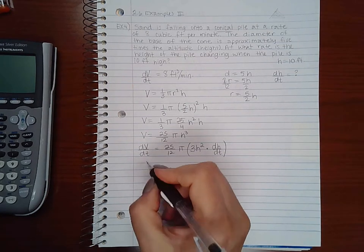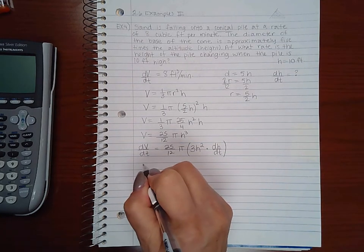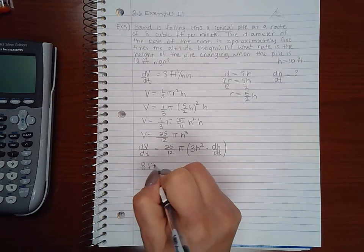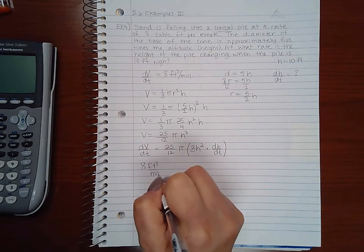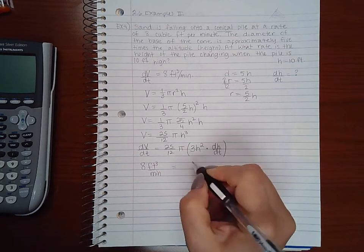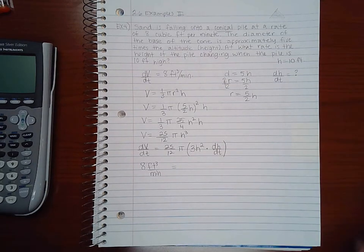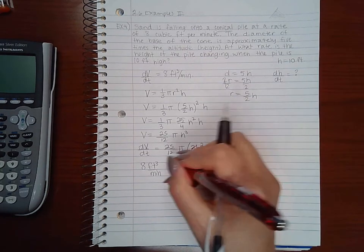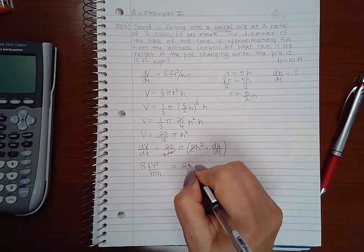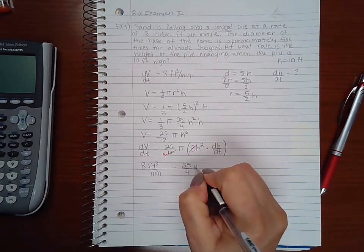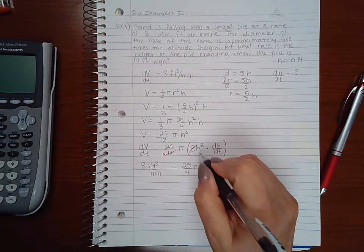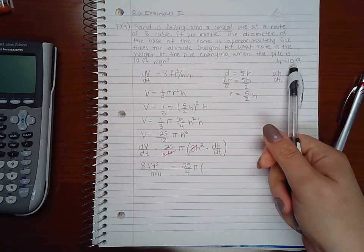And now I can plug in all the information given. So dV/dt was 8 feet cubed per minute, and then now I have this 3 can actually reduce with this 12, so I have 25/4 π, and then h is actually 10 feet.